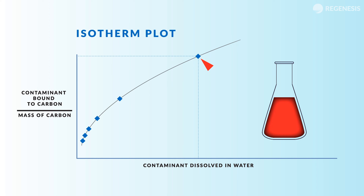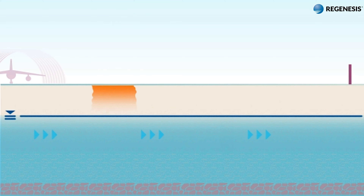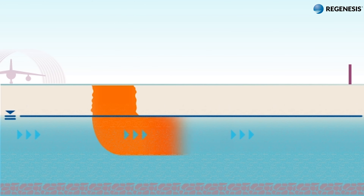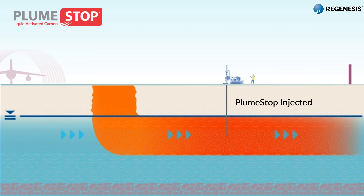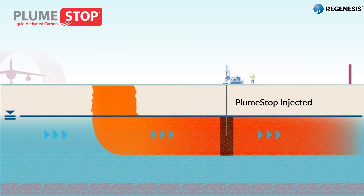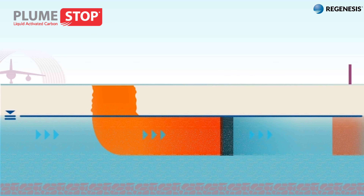To see how this relates to treating an actual contaminated site, let's look at this firefighting training area at an airport, where over time the use of firefighting foam has polluted the underlying soil and groundwater with PFAS. Here, using an injection rig, superfine activated carbon is fed directly into the subsurface, permanently coating the aquifer pore structure with a thin layer of activated carbon. The groundwater is free to move through the aquifer as before, but contaminants are stripped from the water and sorbed into the activated carbon bound to the aquifer materials.